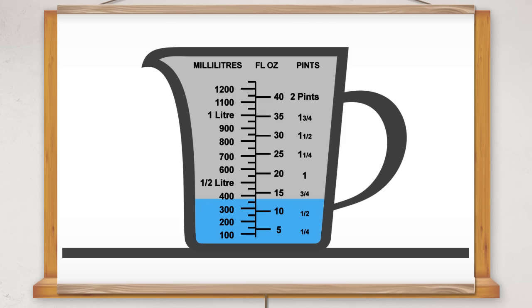For example, the level of water in this jug. Reading from the metric scale is halfway between 350 millilitres and 400 millilitres. We can estimate that there are about 375 millilitres of liquid in the jug.